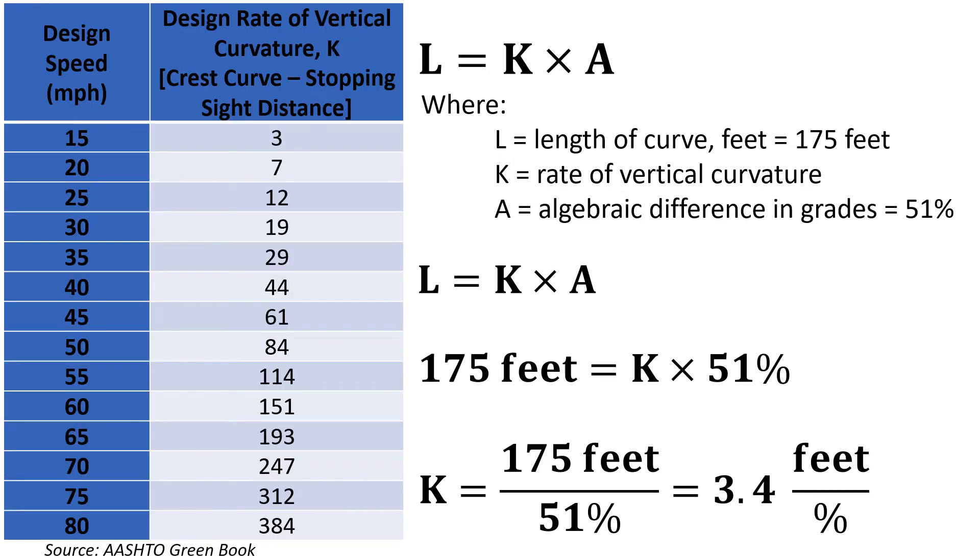The AASHTO Green Book provides us guidance on the design rate of vertical curvature, K, for in particular a crest vertical curve and looking at stopping sight distance, which is the basic type of sight distance that we need to provide for drivers. And we'll see that 3.4 feet per percent fits in this close to that 15 mile per hour design speed.